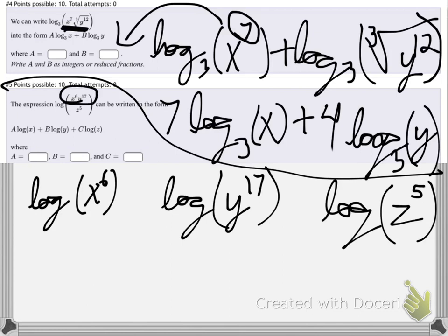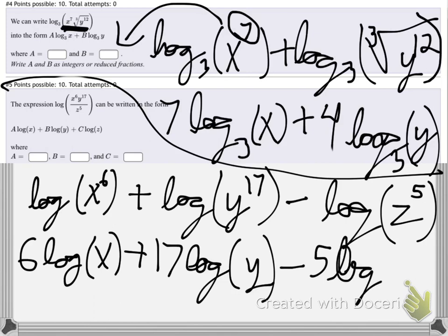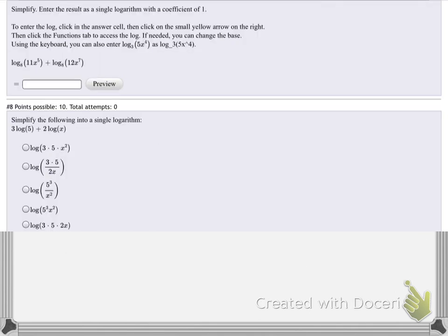And then remember, since the x and the y are timesing, times is like plus. And since the z is being divided, that's going to be minused. So divide is like minus. And then we'll just do the same trick with the exponents. The 6 will come out front, so that'll be 6 log of x plus 17 log of y minus 5 log z.